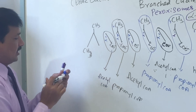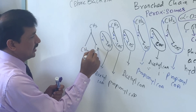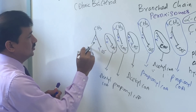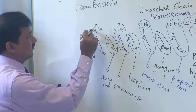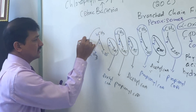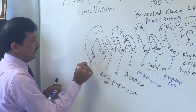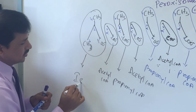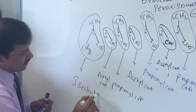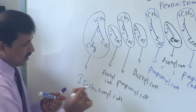You are left with a 4-carbon fatty acid — that is number one, two, three, and four carbons. This 4-carbon fatty acid entire molecule will be released as isobutyryl-CoA.